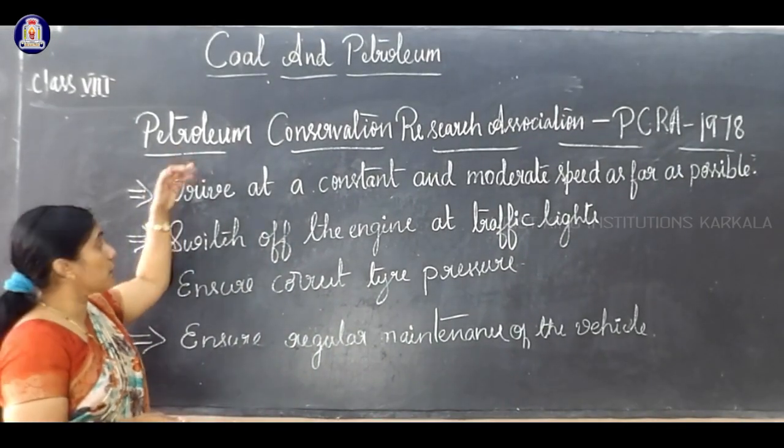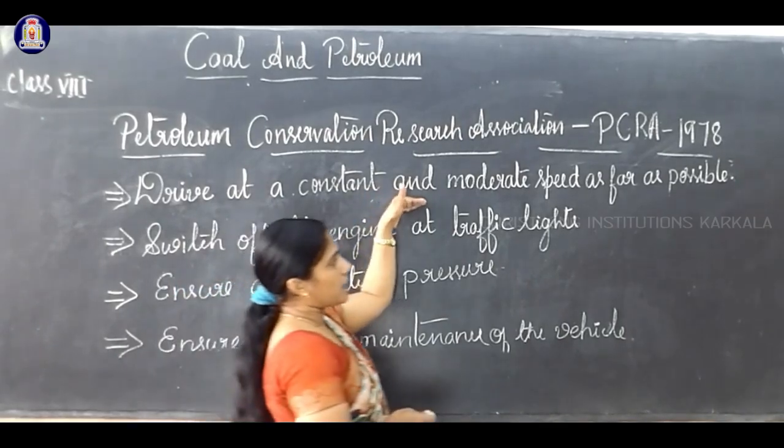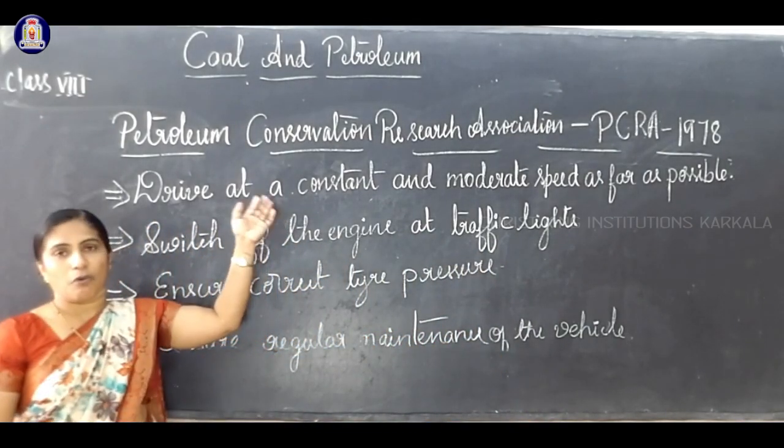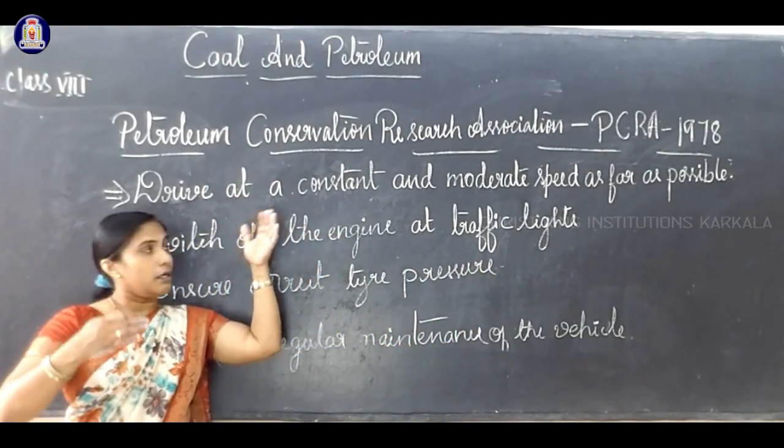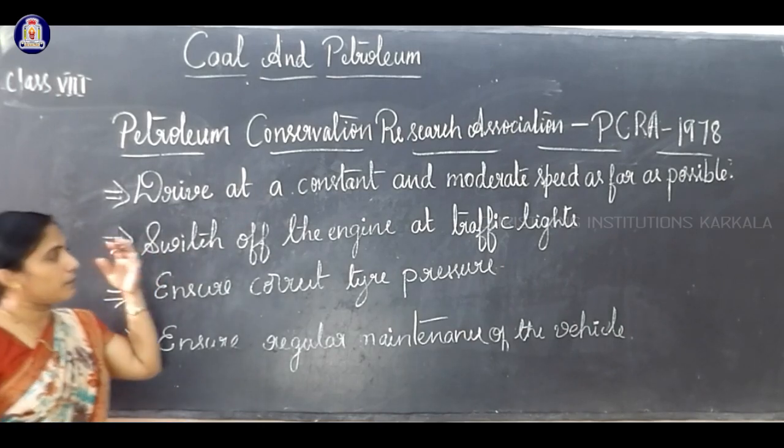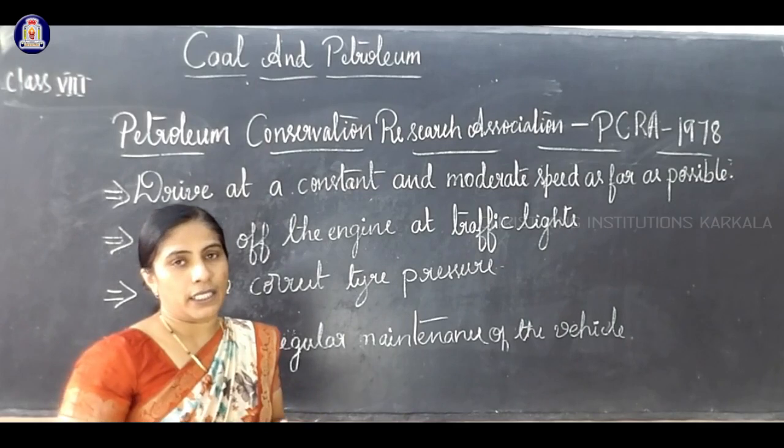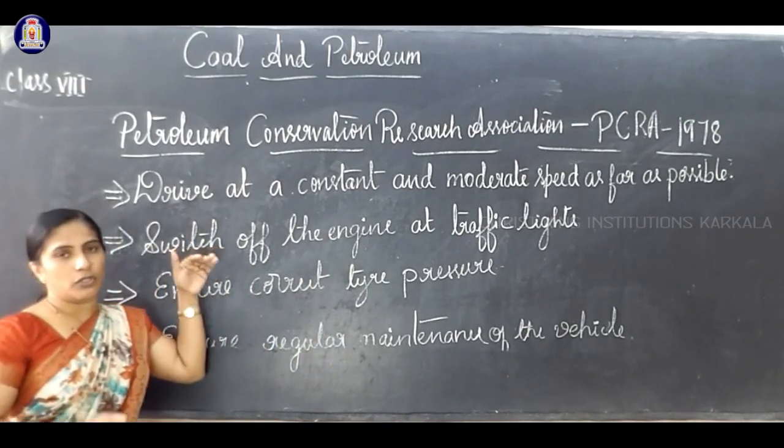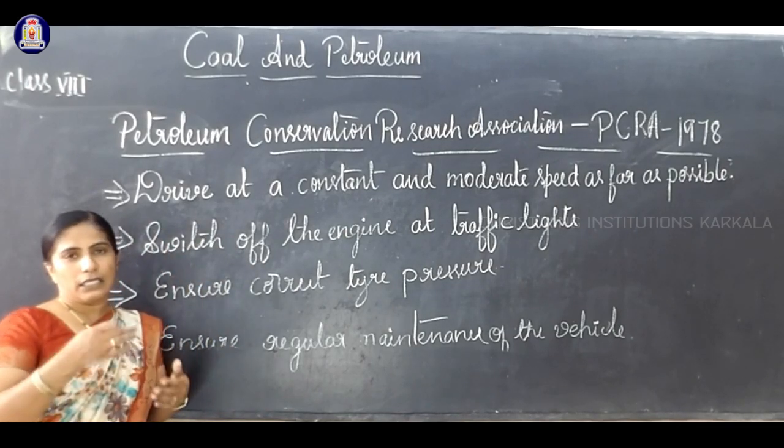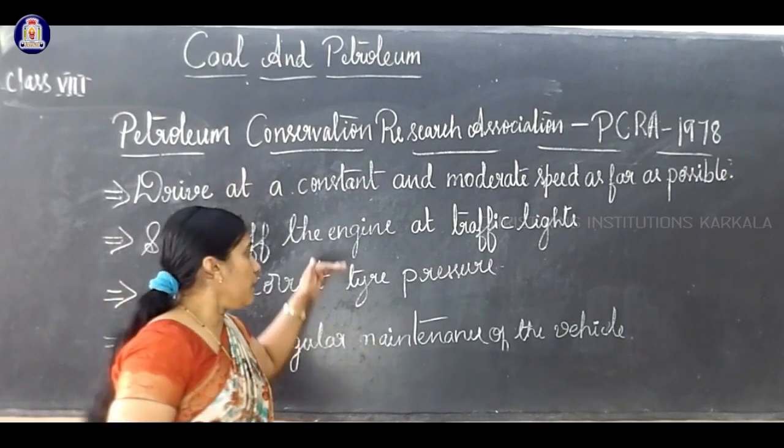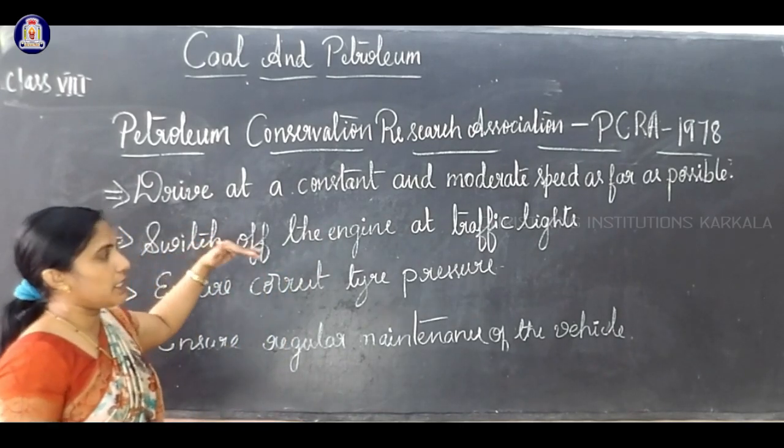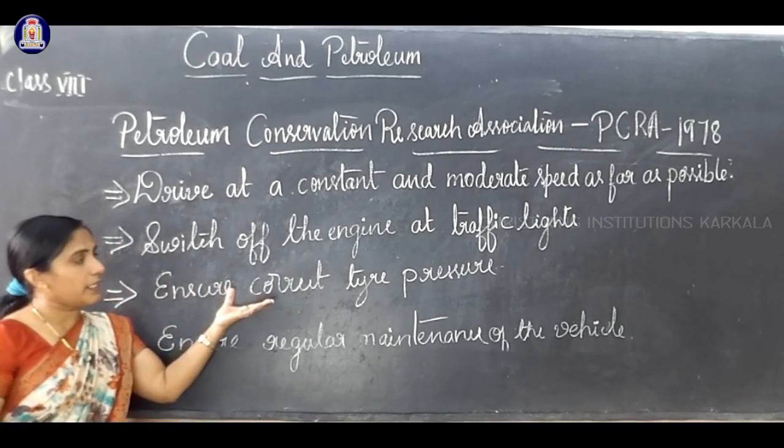According to Petroleum Conservation Research Association, PCRA-1978, first: drive at a constant and moderate speed as far as possible. If you drive a vehicle at constant and moderate speed, we can reduce the use of fossil fuel and save fossil fuels. Second: switch off the engine at traffic signals and wherever you stop.